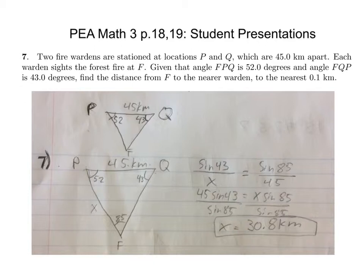Number seven: Two fire wardens are stationed at locations P and Q, which are 45 kilometers apart. Each warden cites the forest fire at F, given that angle FPQ is 52 degrees and angle FQP is 43 degrees. Find the distance from F to the nearer warden to the nearest 0.1 kilometers. This is the original picture with the given information, and you can figure out which one is closer by the angle. This one has a smaller angle, so this is the shorter one. So this fireman is closer to the fire.